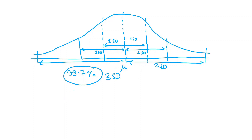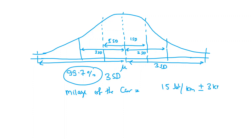In a real-world scenario, consider when we purchase a car and want to know its mileage. They say it gives 15 kilometers per liter, but they also mention plus or minus 3 kilometers. It means it could be 18 or it could be 12, depending on the road and other conditions. That's why they mention the standard deviation — the mean value can deviate by 3 kilometers in the positive or negative direction.